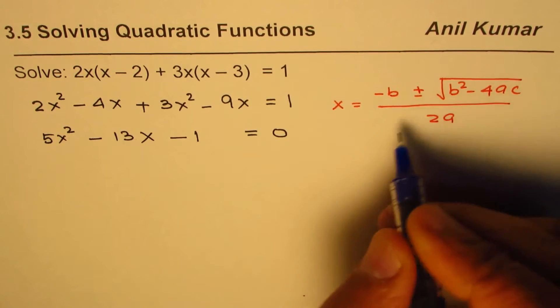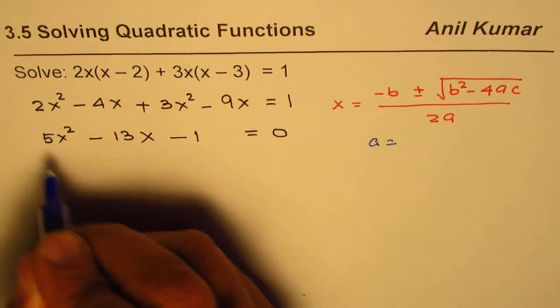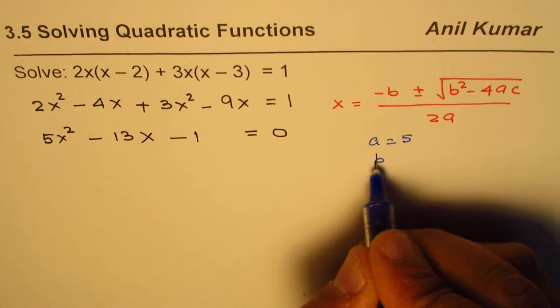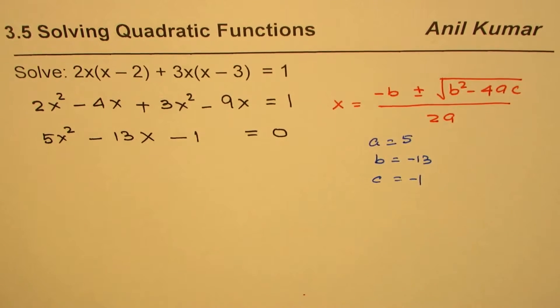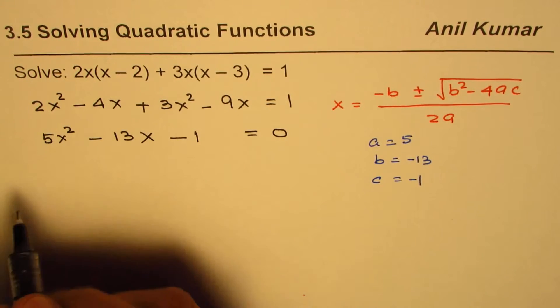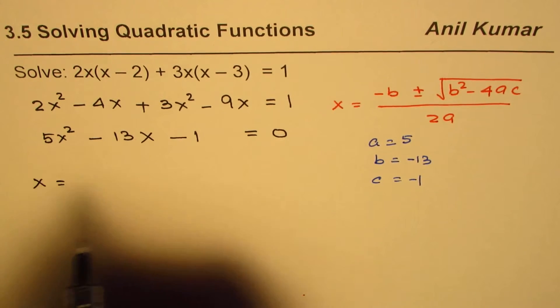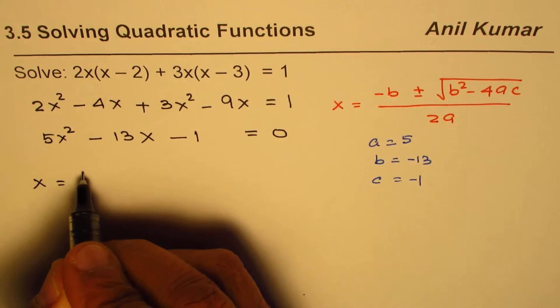So in our case, a is 5, b is minus 13, and c is minus 1. So we'll substitute these values and find the solution. We have x as minus of this value, which is plus 13.